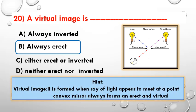A virtual image is formed when the rays of light appear to meet at a point. A convex mirror always forms an erect and virtual image.